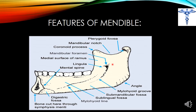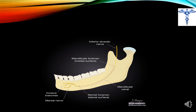The mandibular foramen transmits the inferior alveolar nerve and its vessels. The mandibular foramen continues as the mandibular canal, which continues as the mental foramen, and the mental foramen continues as the incisive canal. An important distinction: the mental foramen transmits the terminal branches of the inferior alveolar nerve, while the mandibular foramen transmits the inferior alveolar nerve and its vessels.